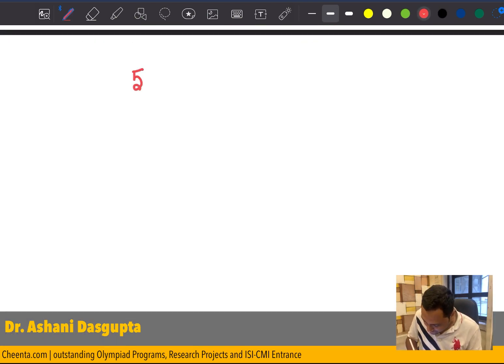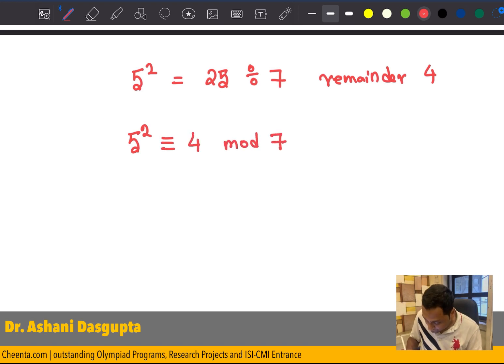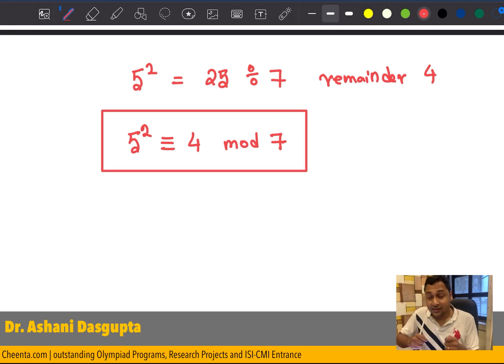So, let's square the number 5. 5 squared, that is equal to 25. If I divide 25 by 7, the remainder is 4. Right? Or, 5 squared is congruent to 4 modulo 7. Again, if you divide the difference of 5 squared and 4, if you divide that by 7, it will be perfectly divisible. That's what it means.